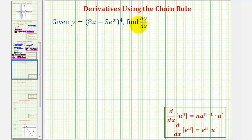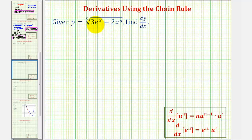We want to find dy/dx given y equals the quantity 8x minus 5e to the power of x, raised to the fourth power. We also want to find dy/dx given y equals the cube root of the quantity 3e to the power of x minus 2x to the fifth.